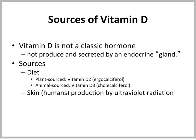Vitamin D is not really considered a classic hormone because it's not produced and secreted by an endocrine gland. Its sources can be from the diet — from plant sources, where we call it vitamin D2 or ergocalciferol, or vitamin D3 from animal sources, called cholecalciferol. In the skin of most mammals, but not dog and cat, vitamin D is produced in the skin by activation of a precursor by UV radiation.